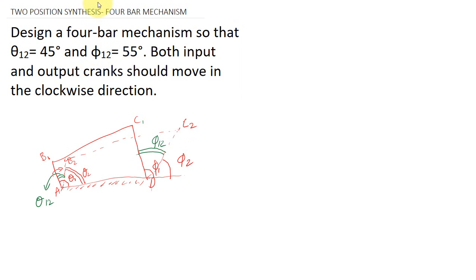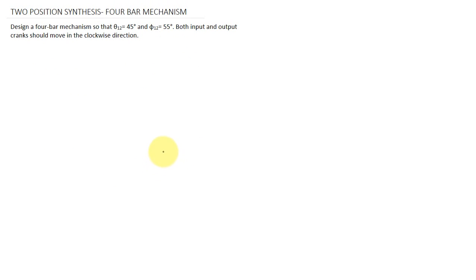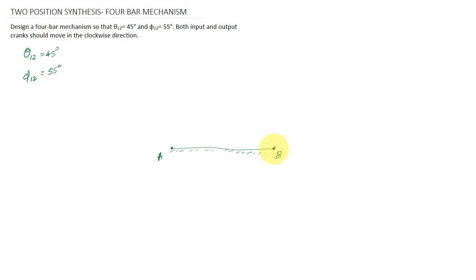So let us move to the problem. Here we have to fix the frame — that means I am going to fix or assume the points A and B. These are the fixed points, and I am joining these two as the fixed link. In the question, it is given that theta12 is equal to 45 degrees and phi12 is equal to 55 degrees. Next, I am assuming the link AB to be 5 centimeters and the length of the link BC to be 3 centimeters.